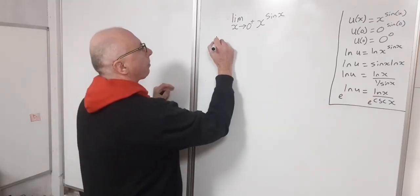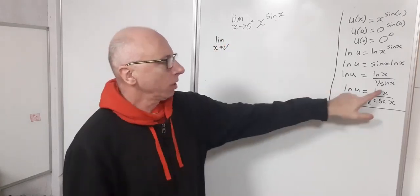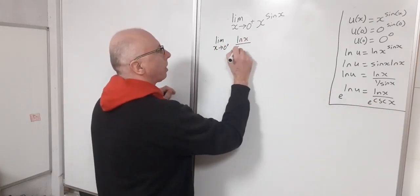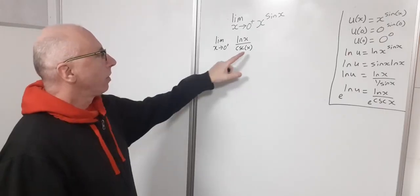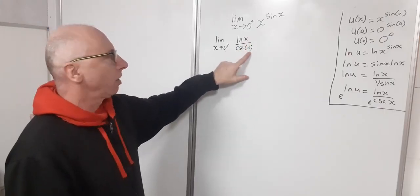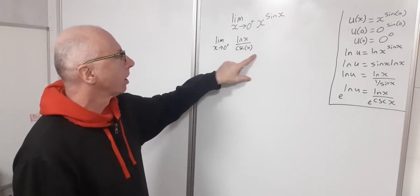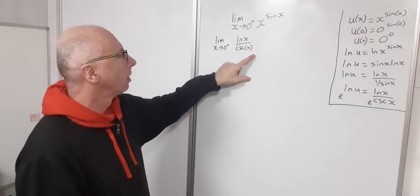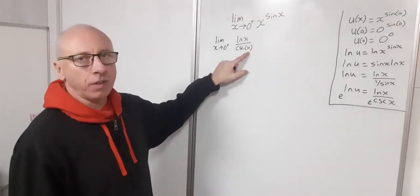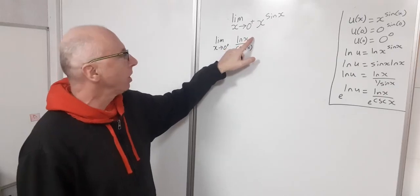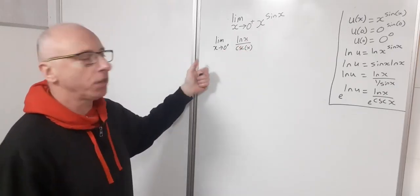So we need the limit as x approaches zero⁺ of ln(x)/csc(x). Plugging in zero gives ln(0) over csc(0), which is undefined — we get negative infinity on top and 1/0 on the bottom. That's no good, so let's apply L'Hôpital's rule and take the first derivative.